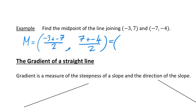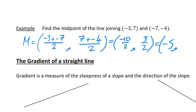Tidying that up: -3 minus 7 is -10, divided by 2 gives -5; and 7 plus minus 4 is 3, divided by 2 gives 1.5. So the midpoint is (-5, 1.5).